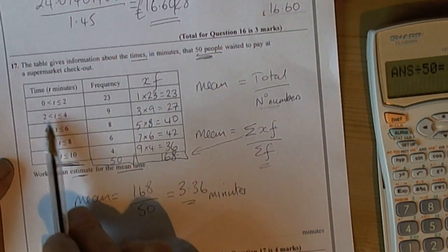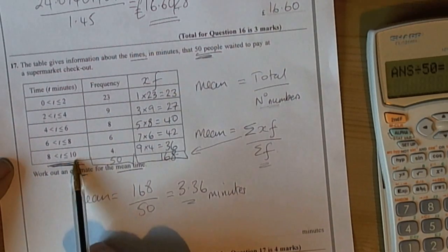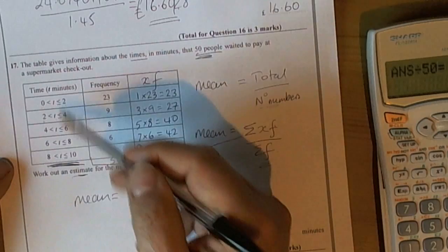So 3.36 is the correct answer. Another check you must do with these kinds of questions is to look at the original data and ask yourself if it's sensible to have 3.36. We can see that 3.36 fits within the time. The lowest possible time was around 0, the biggest possible time was 10.